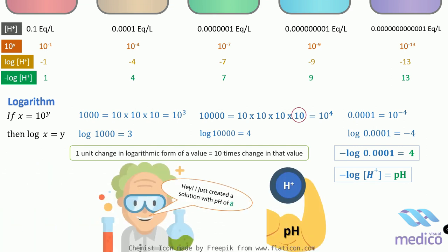Now our friend is very happy. He can simply say that he just created a solution with pH of 8 rather than mentioning lots of zeros.